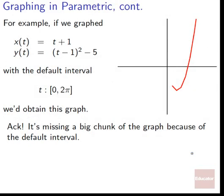For example, if we graphed x = t + 1 and y = (t - 1)² - 5, with the default interval of t going from 0 to 2π, we'd obtain this graph here. It's missing a big chunk of the graph because of that default interval. We can see that it should also have a portion going this way, but it's just completely missing that because our default interval stops. It doesn't even go under 0.